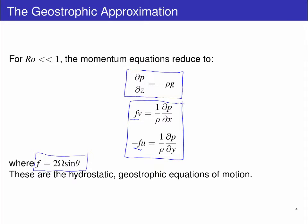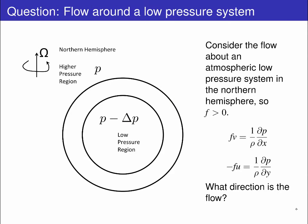This is why cyclones, hurricanes, typhoons, atmospheric weather systems, ocean currents and gyres flow in opposite directions in the northern and southern hemispheres. Consider an atmospheric low pressure system in the northern hemisphere.